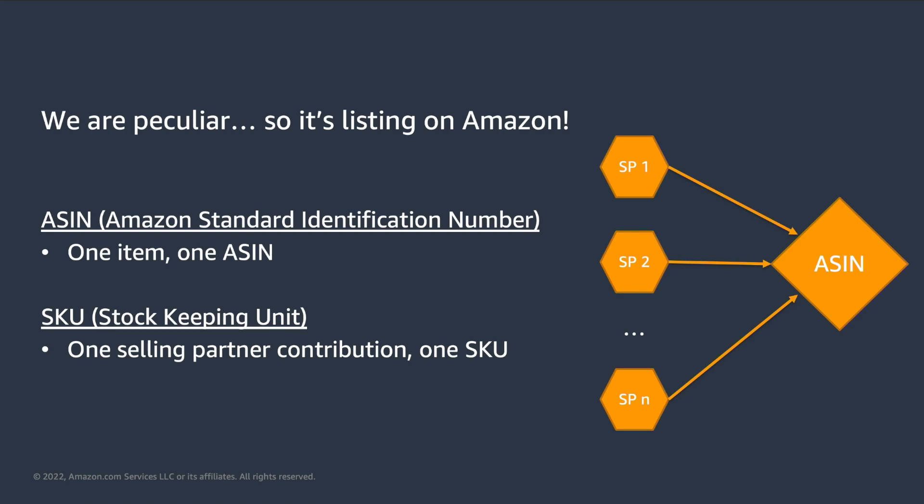The stock keeping unit, or SKU on the other hand, is a value that is unique to the selling partner's contribution. Different selling partners, for example 10, might decide to sell the same product, and this will result in 10 different SKUs. As the image on the right illustrates, building an ASIN's data is a process that receives input from the contributions from all the different selling partners that decide to list that item.